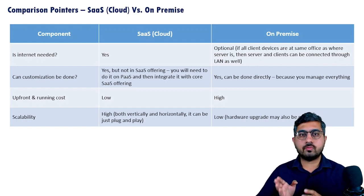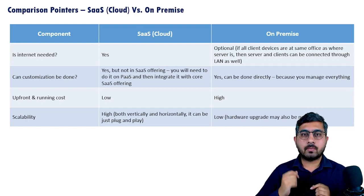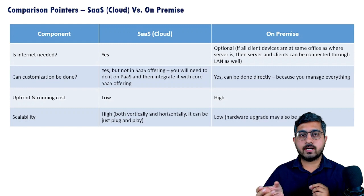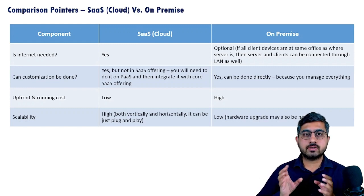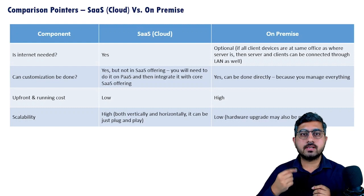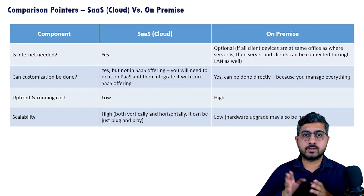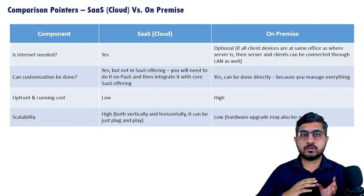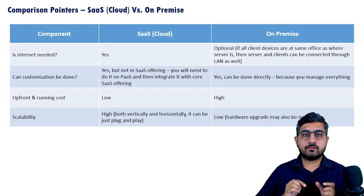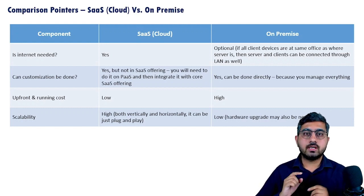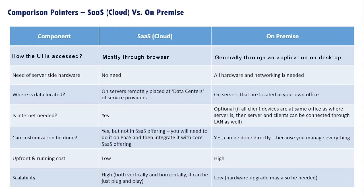Even in case of on-premise, scaling is doable, but it may require hardware changes — if you add more applications or increase the number of users, you might need to increase hardware capacity since you manage the hardware yourself. On the other hand, with SaaS you get essentially unlimited hardware scalability, making it better than on-premise from a scalability standpoint. This is also why the running cost is lower in the case of a SaaS-based offering.